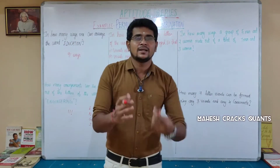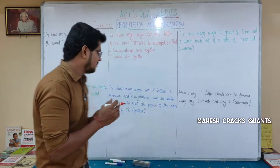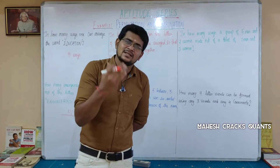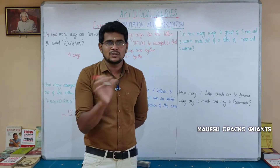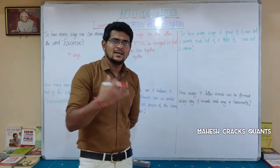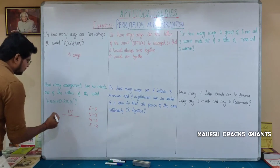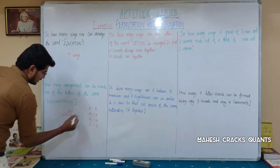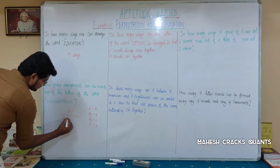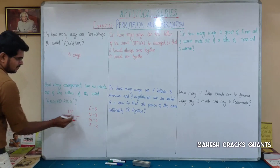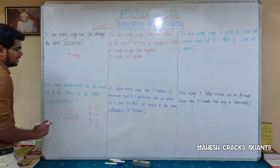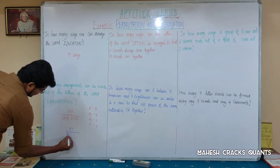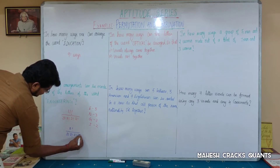So the repeated letters contribute factorial values in the denominator. The answer is: 11-factorial divided by 3-factorial (for E) × 3-factorial (for N) × 2-factorial (for G) × 2-factorial (for I) ways. So 3 for E, 3 for N, 2 for G, and 2 for I. Answer: 11! / (3! × 3! × 2! × 2!) ways.